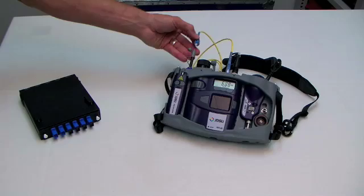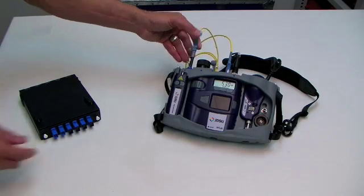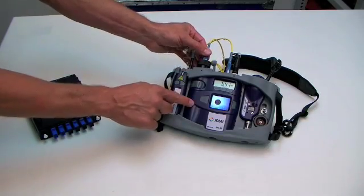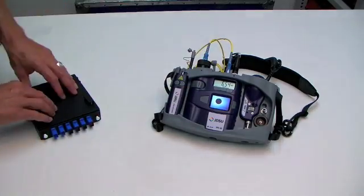I pull the test lead out, I put it into the cleaning tool that's held in the carrier, give it a couple cleans, put it back in the patch cord viewer, and I can see that my test lead is clean.